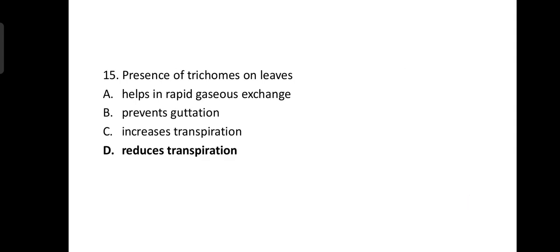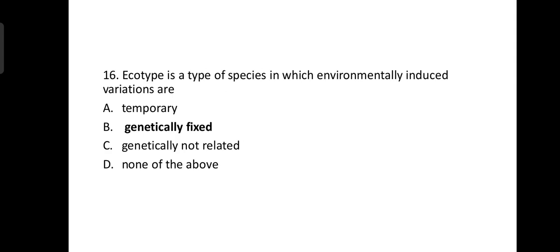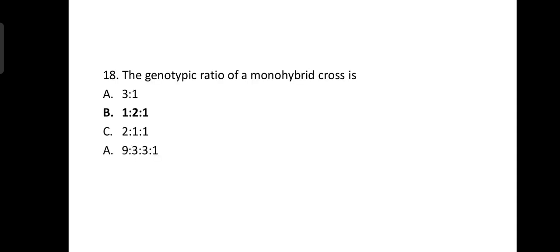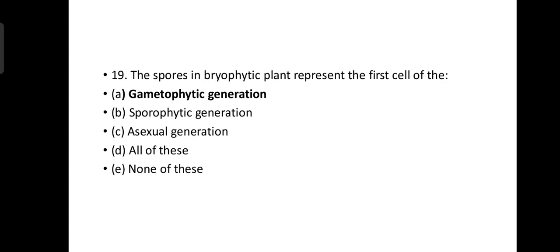The seed coat's most important function is to provide desiccation resistance. Presence of trichomes on leaves helps in reduced transpiration. Ecotype is a type of species in which environmentally induced variations are genetically fixed. The membrane around the vacuole is known as tonoplast. This is a simple question but it is mostly asked. The genotypic ratio of monohybrid cross is 1:2:1.